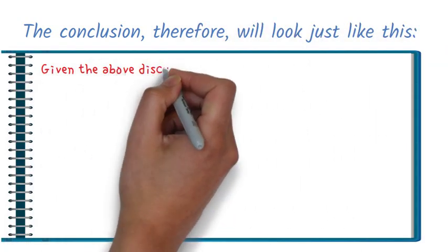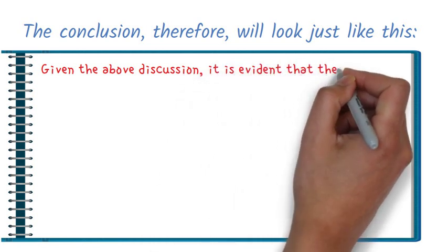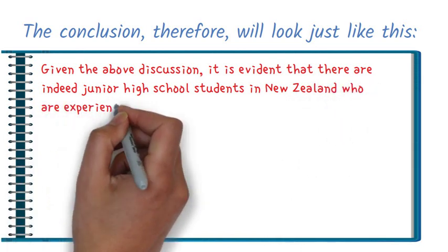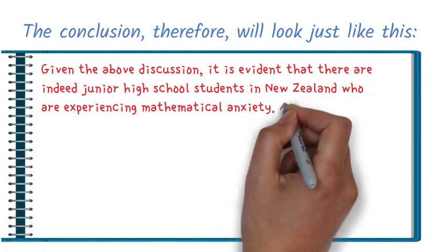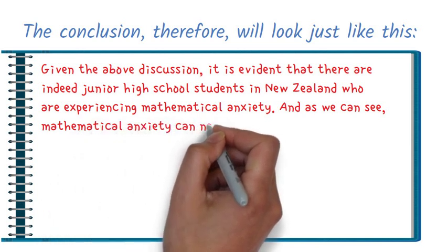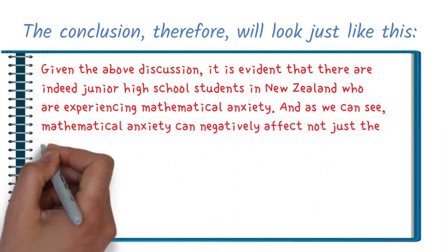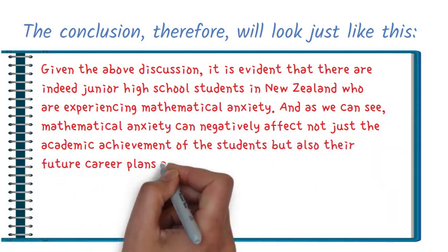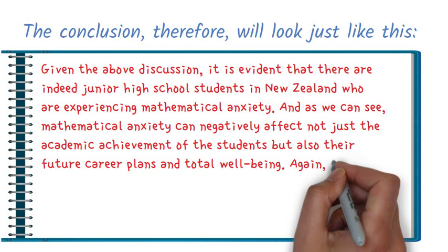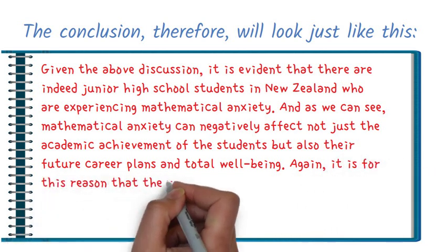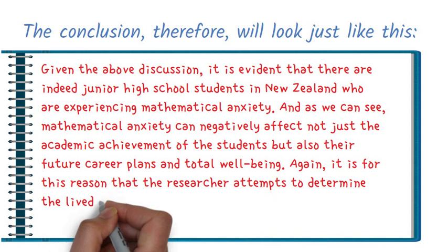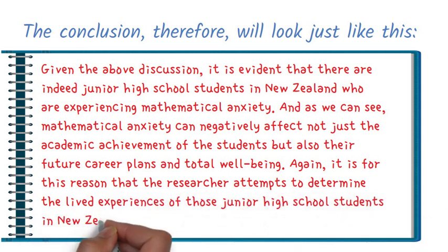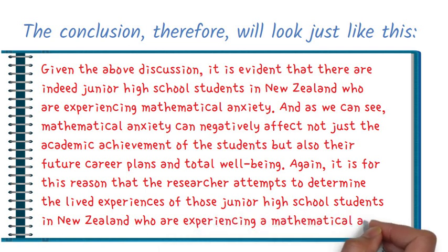Given the above discussion, it is evident that there are indeed junior high school students in New Zealand who are experiencing mathematical anxiety. And as we can see, mathematical anxiety can negatively affect not just the academic achievement of the students, but also their future career plans and total well-being. Again, it is for this reason that the researcher attempts to determine the lived experiences of those junior high school students in New Zealand who are experiencing mathematical anxiety.